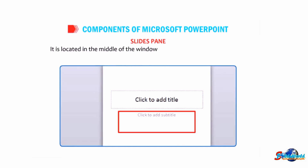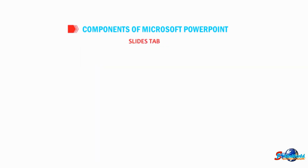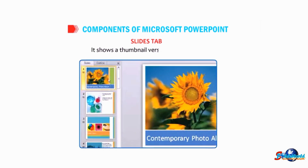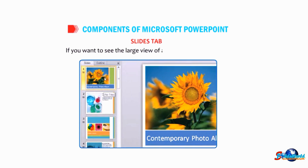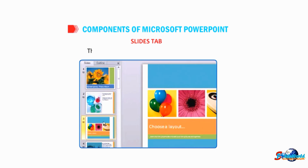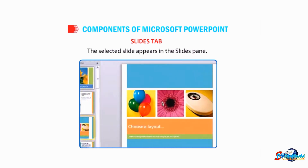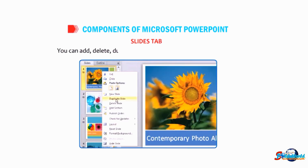Slides pane: it is located in the middle of the window where you can work directly on the individual slides. Slides tab: it shows a thumbnail version of each slide. If you want to see the large view of any thumbnail, click on it — the selected slide appears in the Slides pane. You can also add, delete, duplicate, and rearrange slides in the Slides tab.